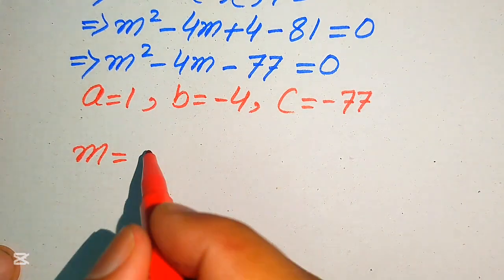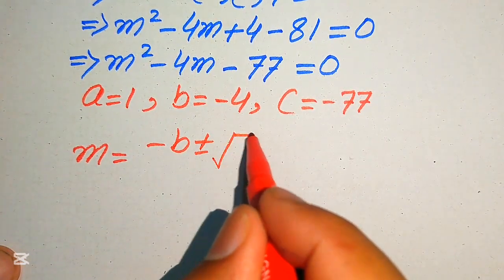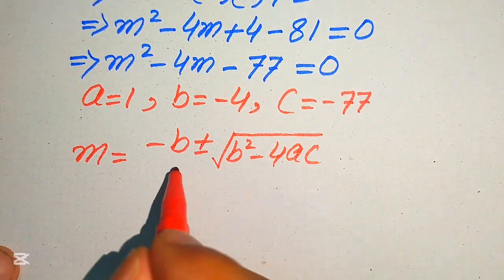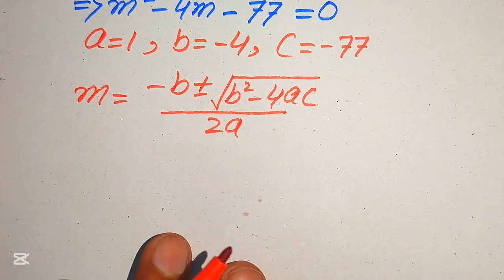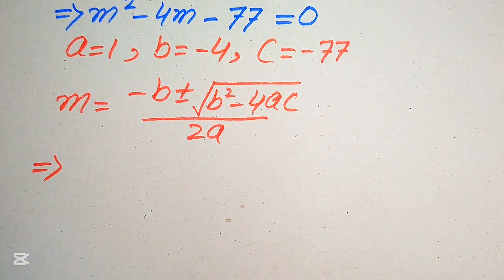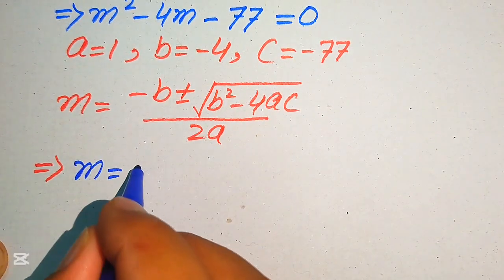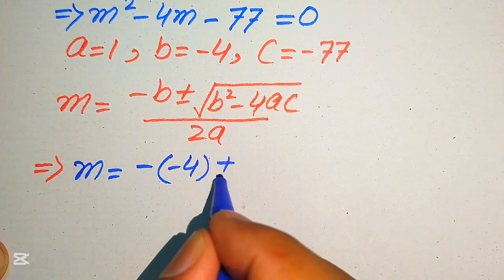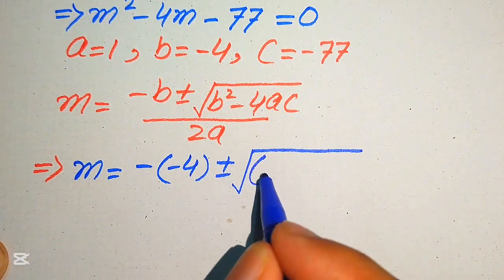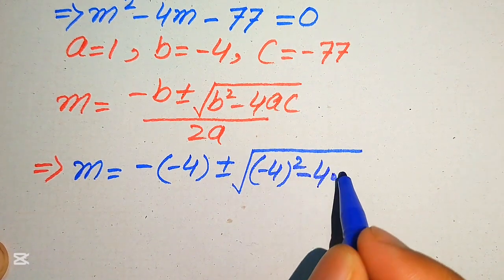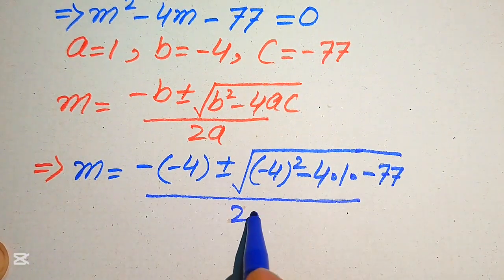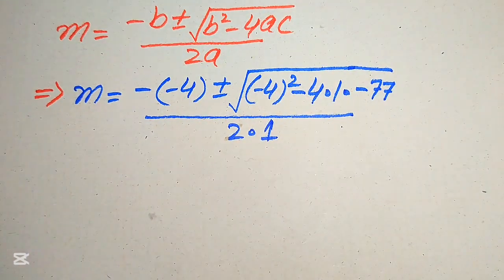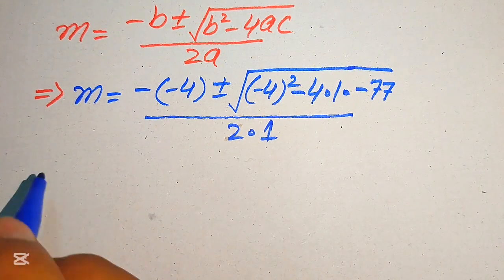The quadratic formula is: m equals minus b plus or minus square root of (b squared minus 4ac), divided by 2a. Substituting the values: m equals minus (minus 4) plus or minus square root of (minus 4) squared minus 4 times 1 times (minus 77), divided by 2 times 1.